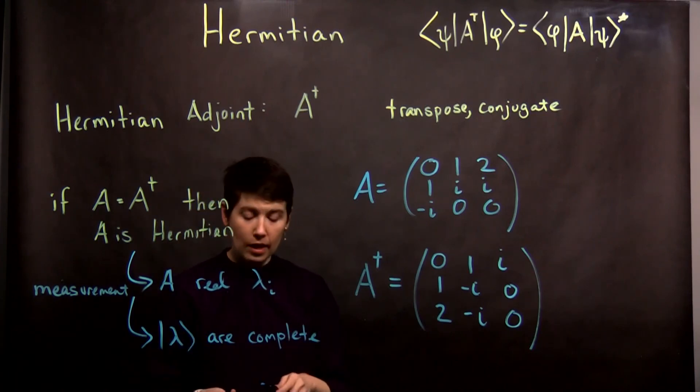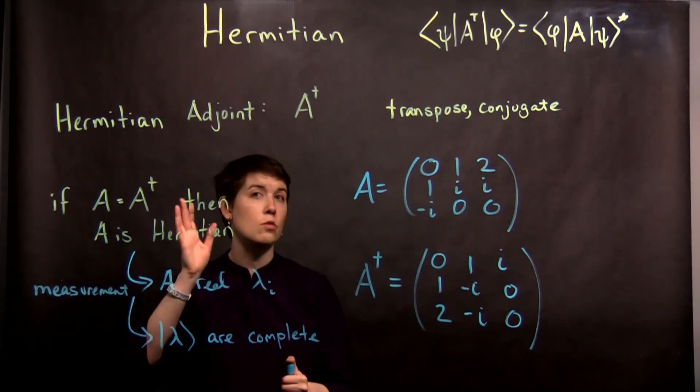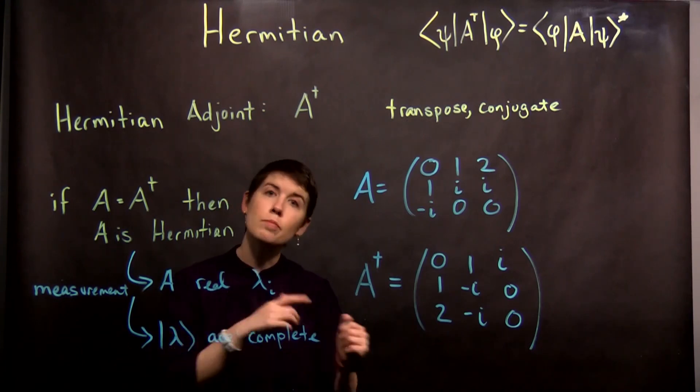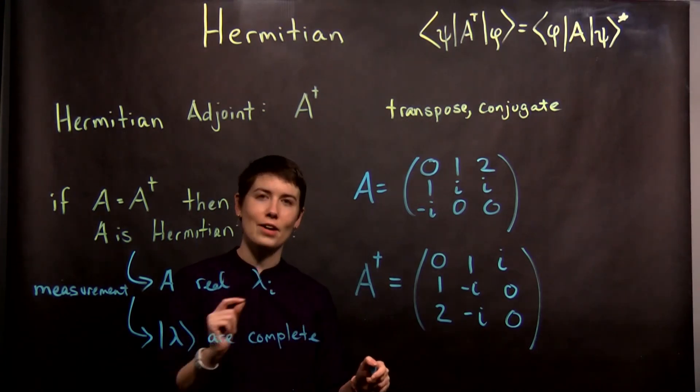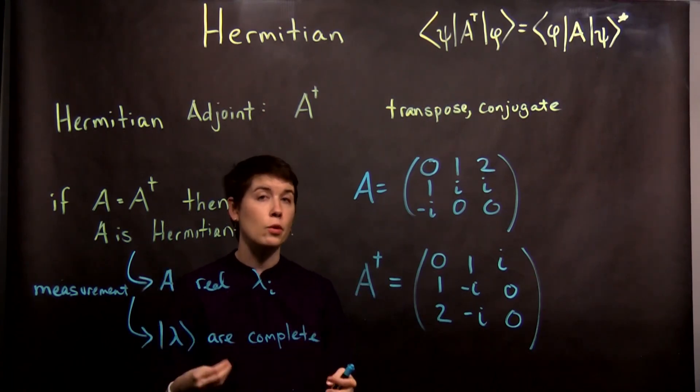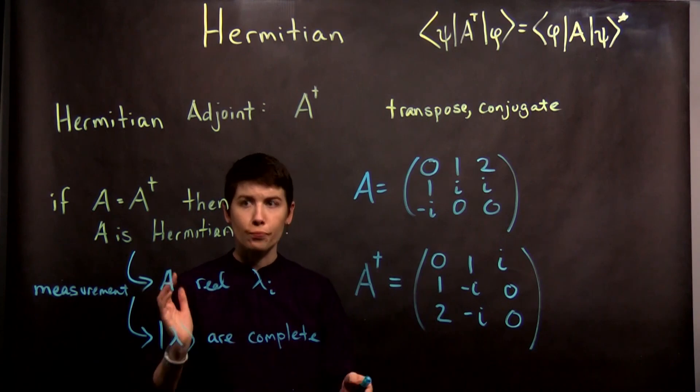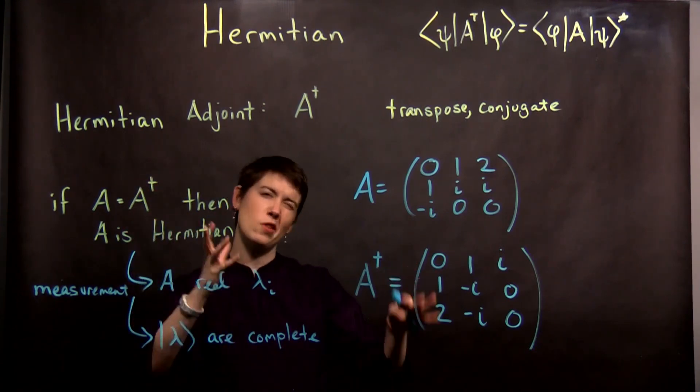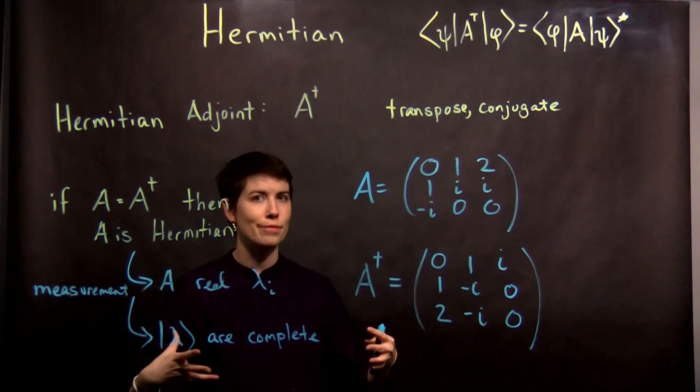So we will encounter operators, we will encounter matrices in this class that are not Hermitian. They still might be useful, but they're not actually going to result in measurements. They're not going to represent a real observable. So get used to this. It's going to be something pretty important later on, but for now it's just kind of a mathematical term to learn.